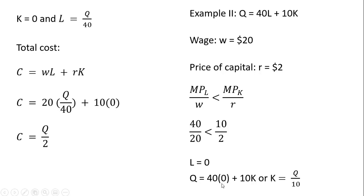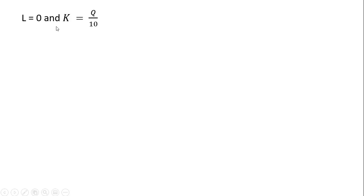So going to our production function and plugging 0 in for L, and then solving for K. So you'll have Q equals 10K, solving for K, K will equal Q divided by 10.